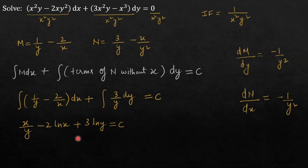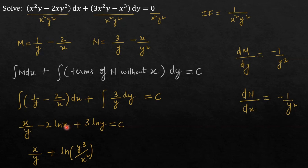Simplifying further using log properties: x/y + log(y³/x²) = c. Taking the coefficient 2 inside the log gives x², and taking 3 inside gives y³. Since one is subtracted, the terms divide inside the logarithm. Therefore, the solution of the given differential equation is x/y + log(y³/x²) = c.